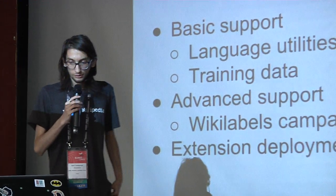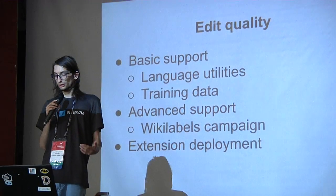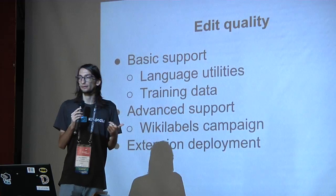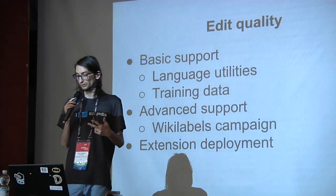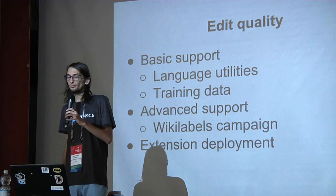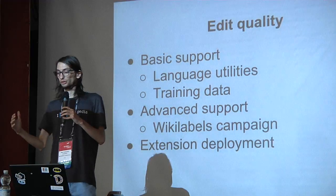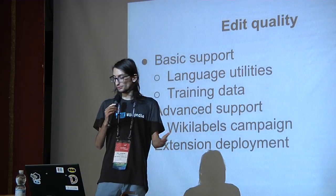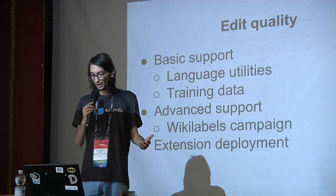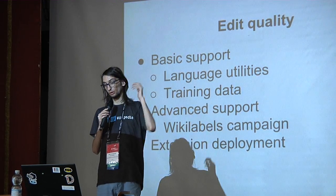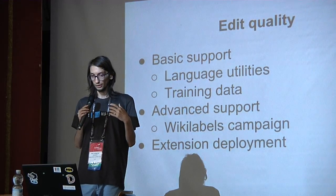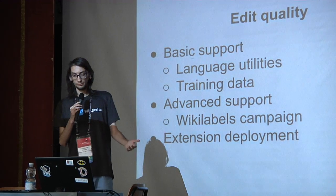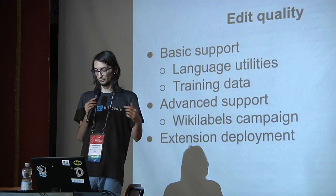In order to get edit quality — basic support for any new languages — we need two things. First is language utilities, like lists of bad words and lists of informal words. Bad words are words you cannot use in Wikipedia at all, not in talk pages, not in articles — like swear words, curses that you use in everyday life. But informal words like 'hey' you cannot use in article namespace, but you might use them in a talk page to say hi to a friend, and that's okay. We need to distinguish between these.